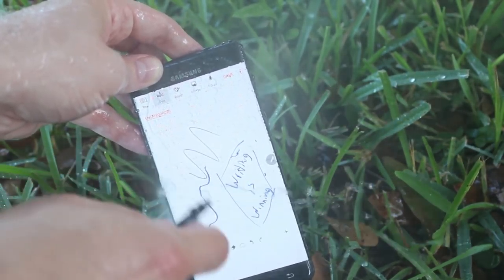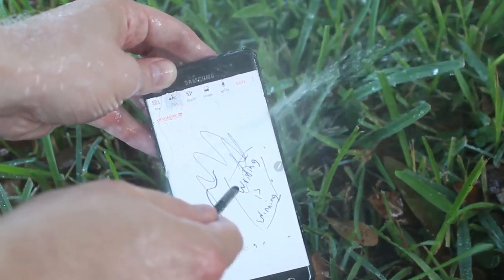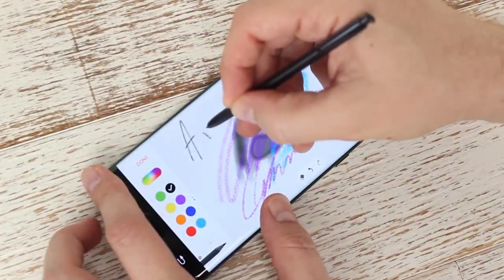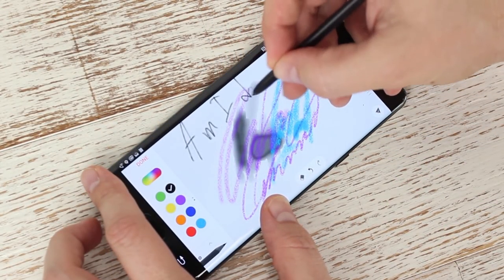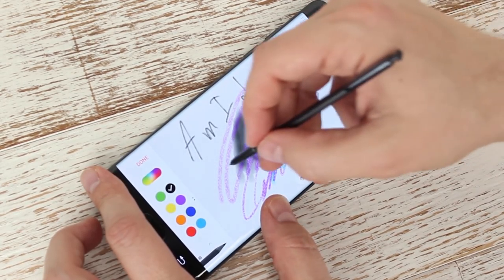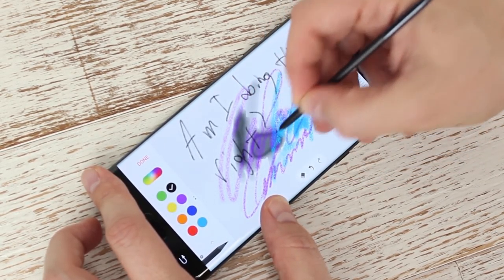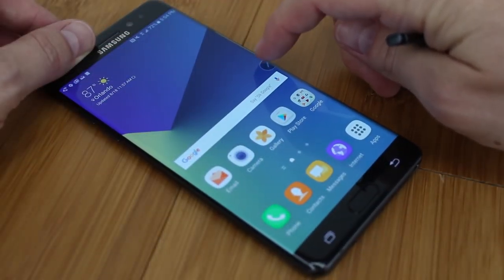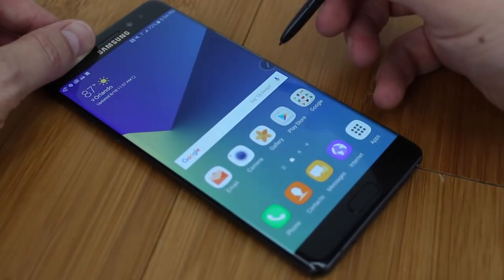Palm rejection features on the phone are better than ever too, and make it incredibly easy to jot down notes and not have to worry about keeping your skin off the screen to keep from writing stuff or erasing stuff accidentally. In fact, there are quite a few areas that can't be touched at all, like Air View for instance, which can only be activated via the S Pen's touch, not your fingers.